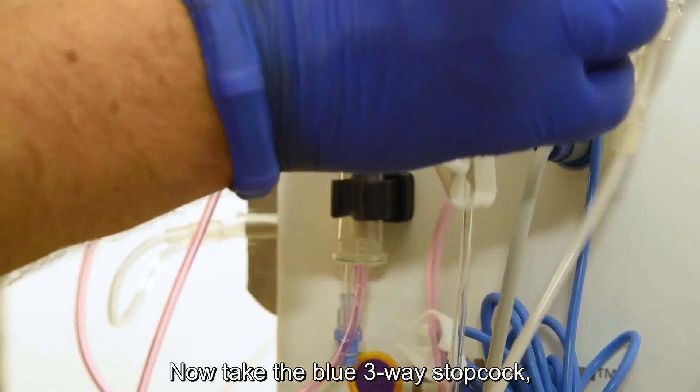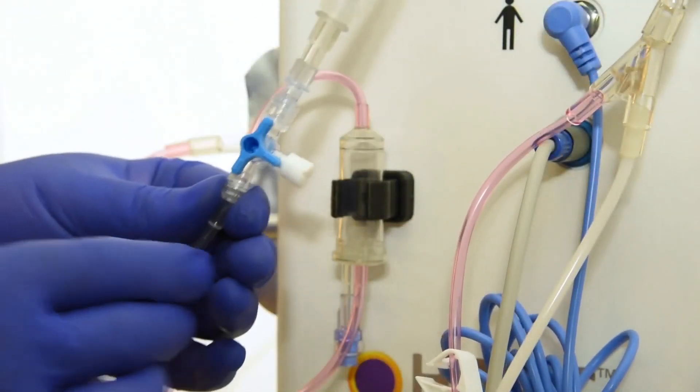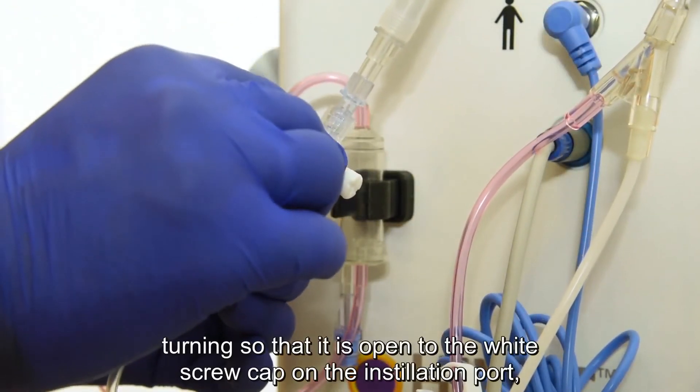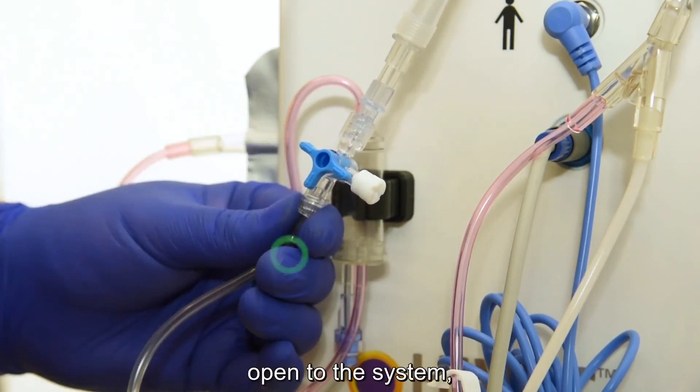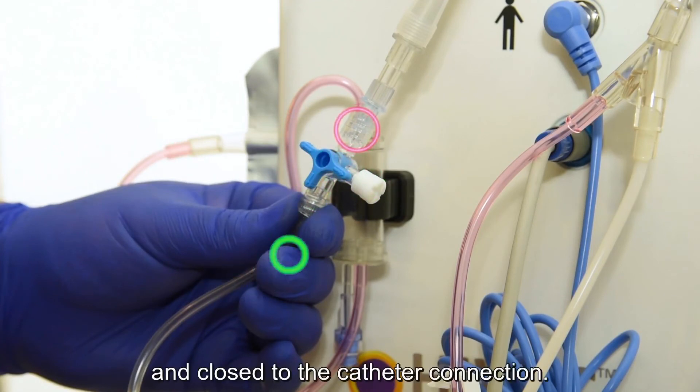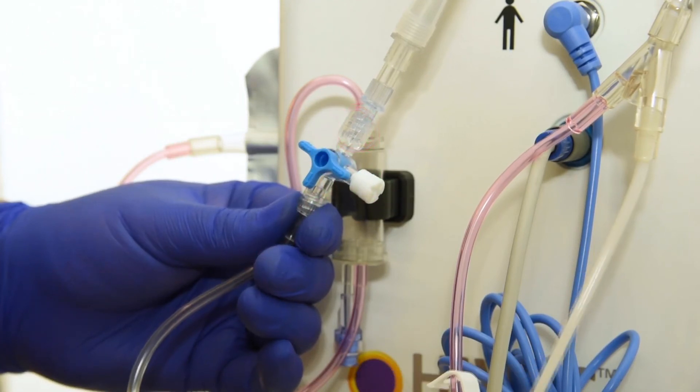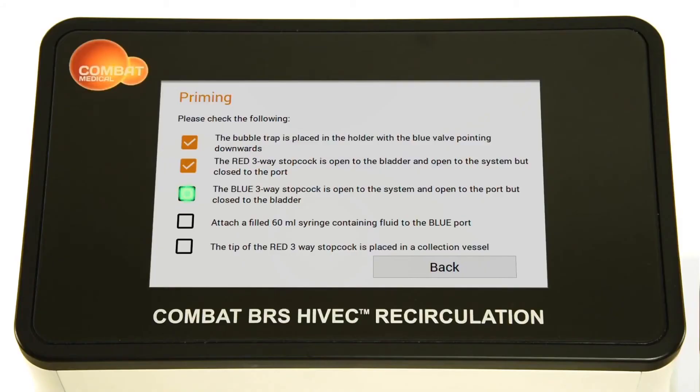Now, take the blue three-way stopcock, turning it so that it is open to the white screw cap on the installation port. Open to the system and close to the catheter connection. And confirm.